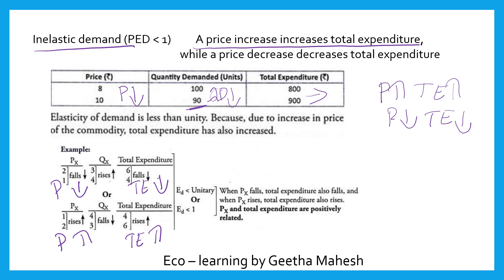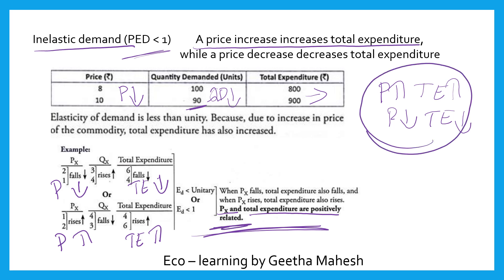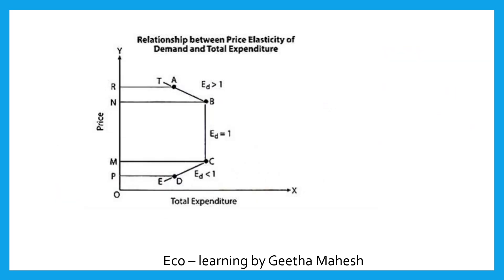So price of X and total expenditure are positively related — they move in the same direction — indicating inelastic demand where elasticity is less than 1. This is how we measure price elasticity of demand using the total expenditure method.